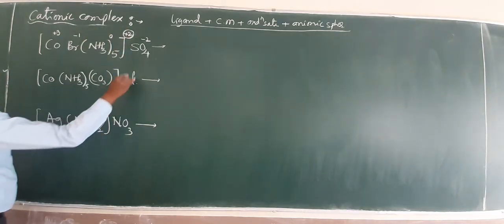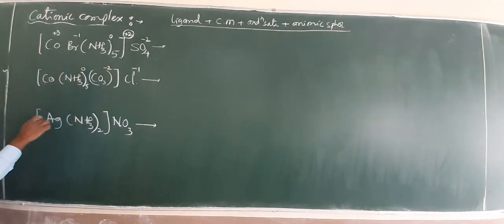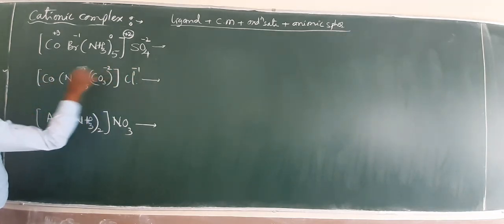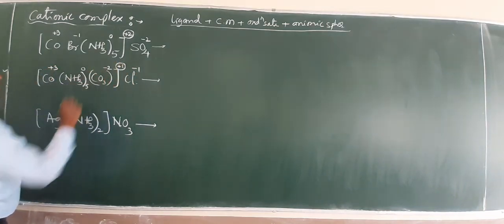Similarly, Cl is minus 1. Carbonate, CO3 minus 2. Ammonia is 0. Now, minus 3, the net charge is plus 2. Cationic complex.